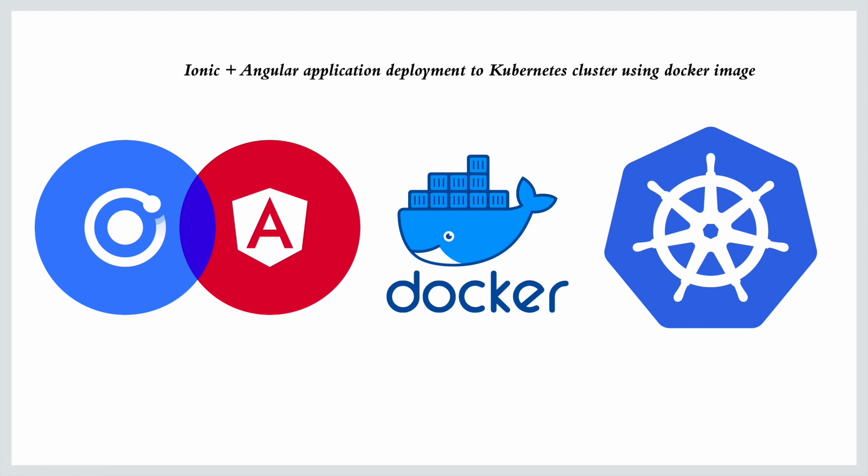Today we're going to learn a different topic. Usually I create videos on Pega, but today I'm going to show how we can deploy Angular plus Ionic applications to a Kubernetes cluster using Docker images. Ionic can be combined with Angular, React, or anything. Even if you have a separate Angular application, the process is the same or very similar.